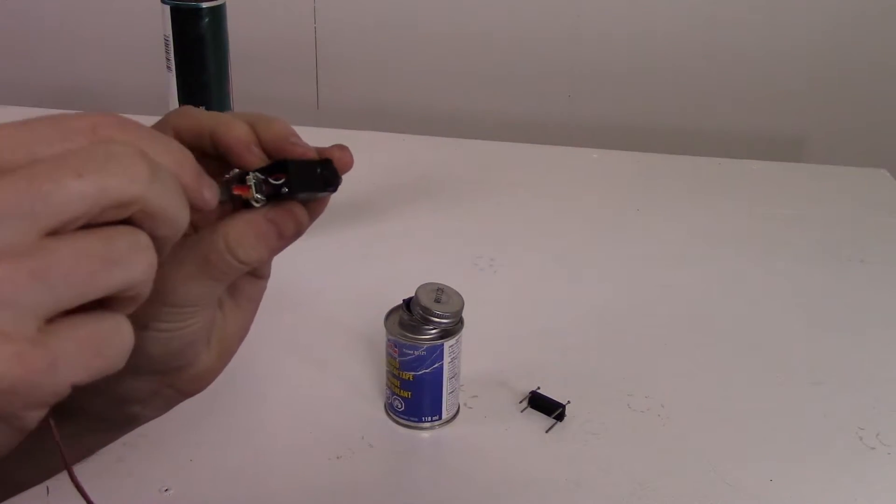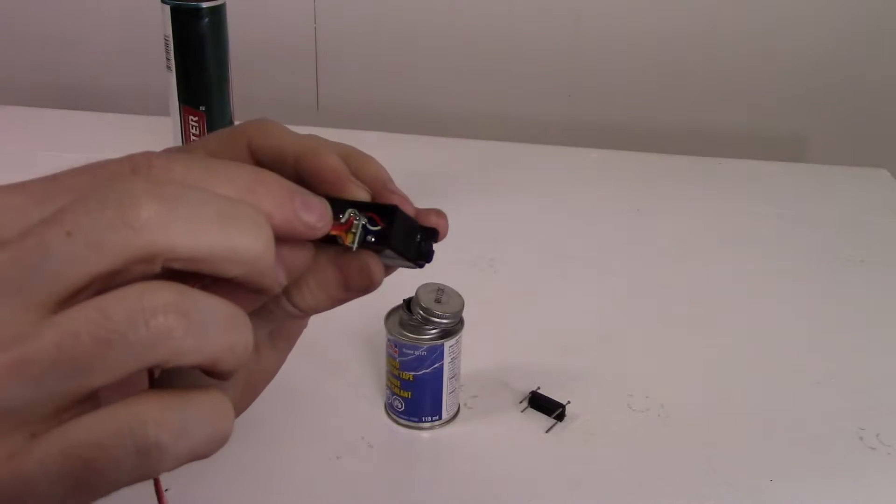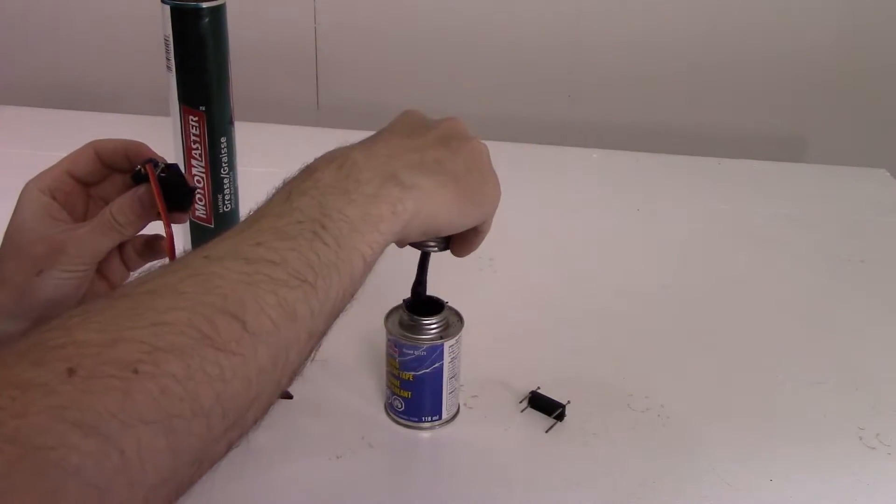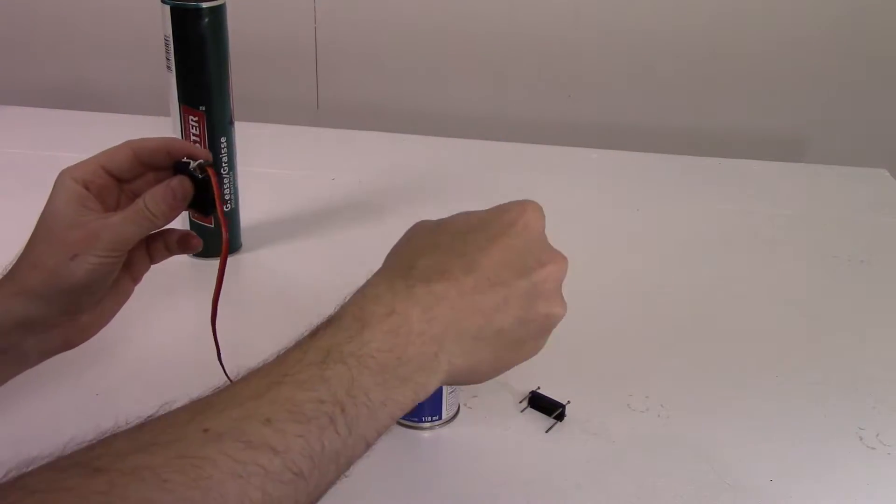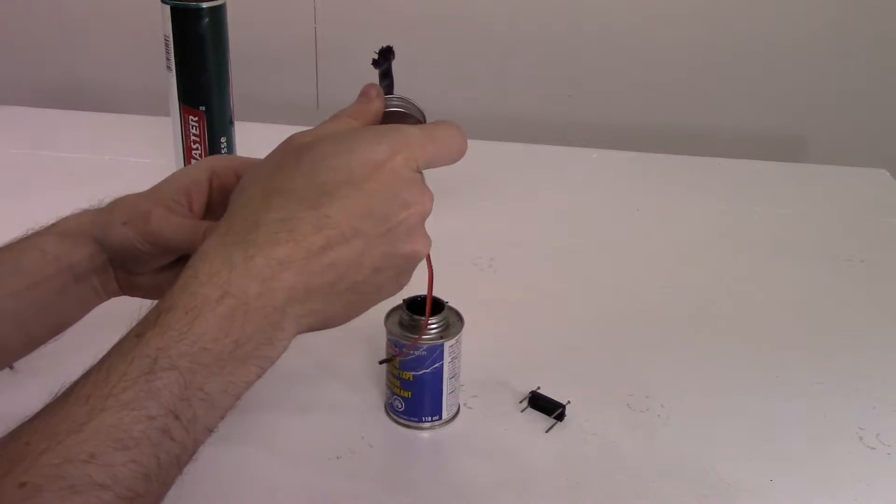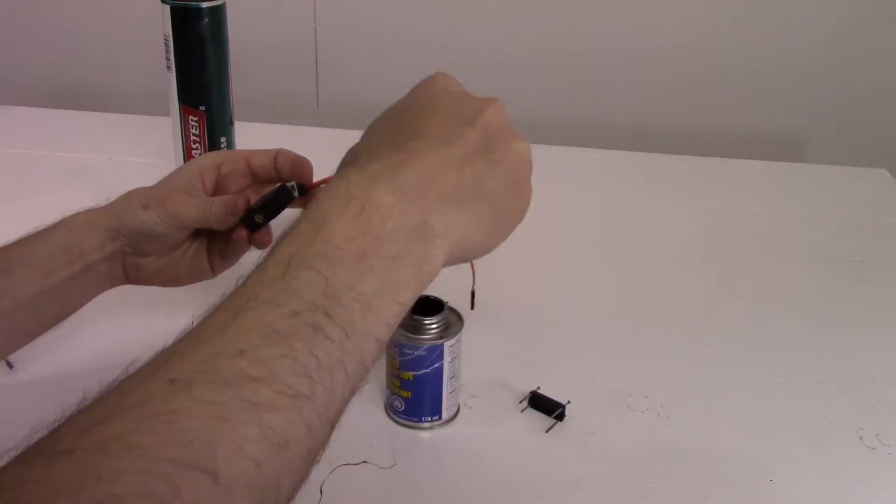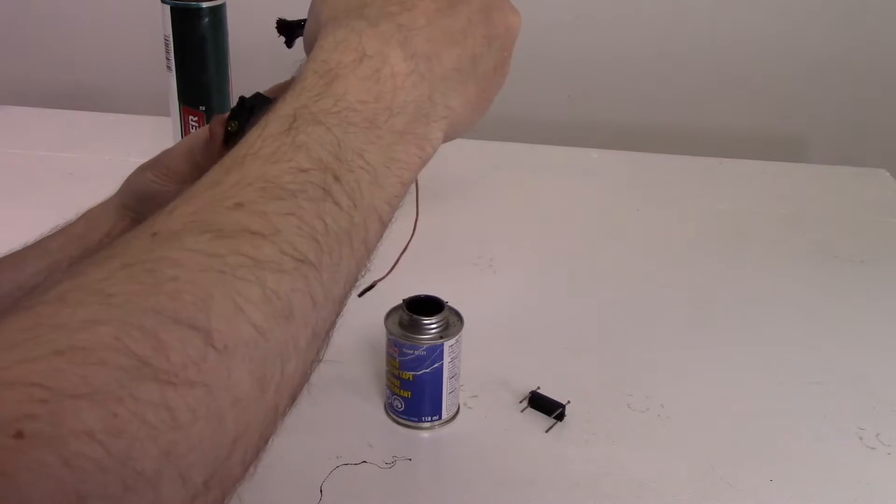We're just going to cover the circuit board on both sides as much as possible in the electrical tape. It's very messy and it drips easy, so be careful with that.